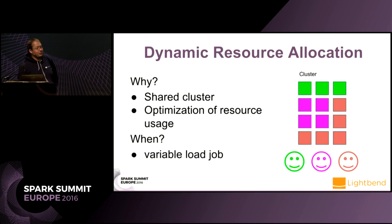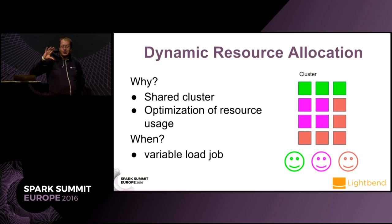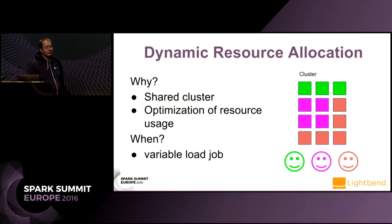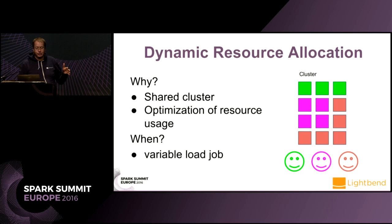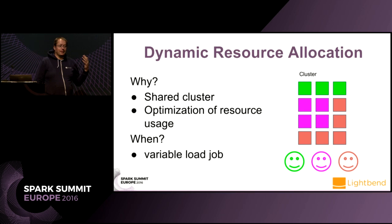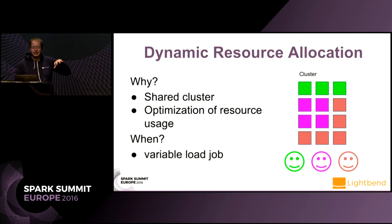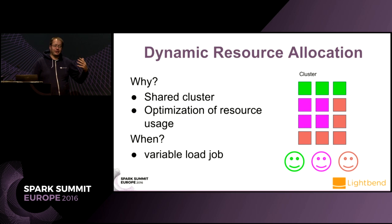Why use dynamic resource allocation? My example was showing only one element on the cluster, so it doesn't really make sense in isolation. Dynamic resource allocation really makes sense when you have a shared cluster. If you have a cluster dedicated to one specific task, you just assign all the resources to the job. But on a shared cluster, it makes sense to use dynamic resource allocation, especially if you have jobs with variable load that need more resources at some points and less at others.